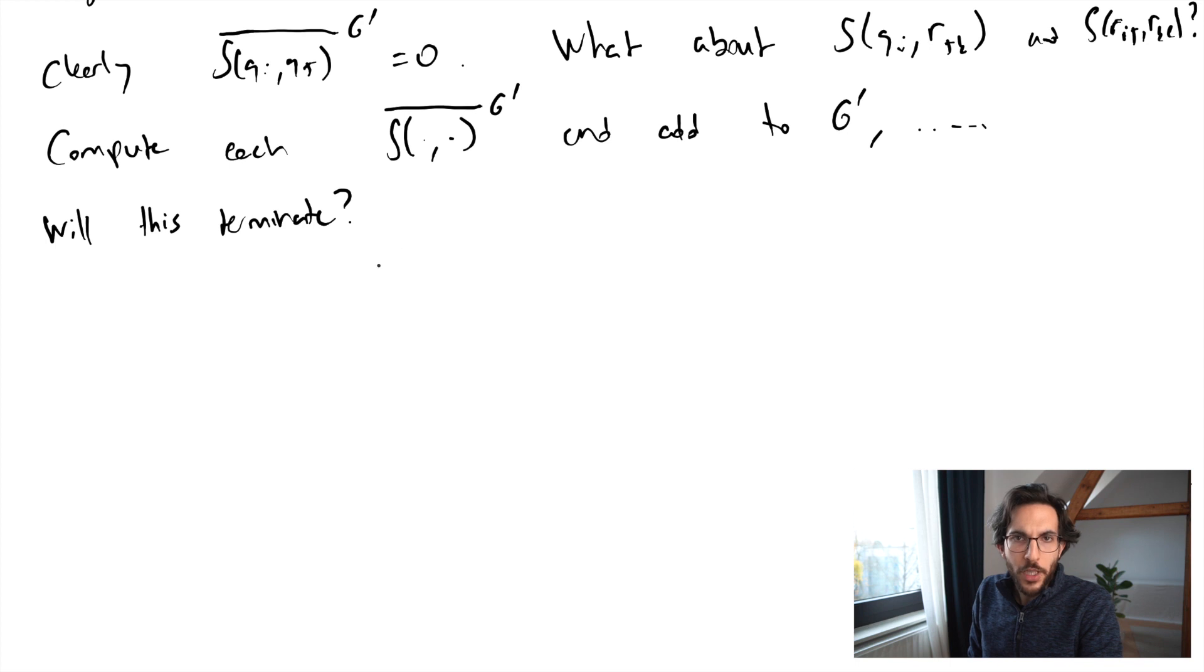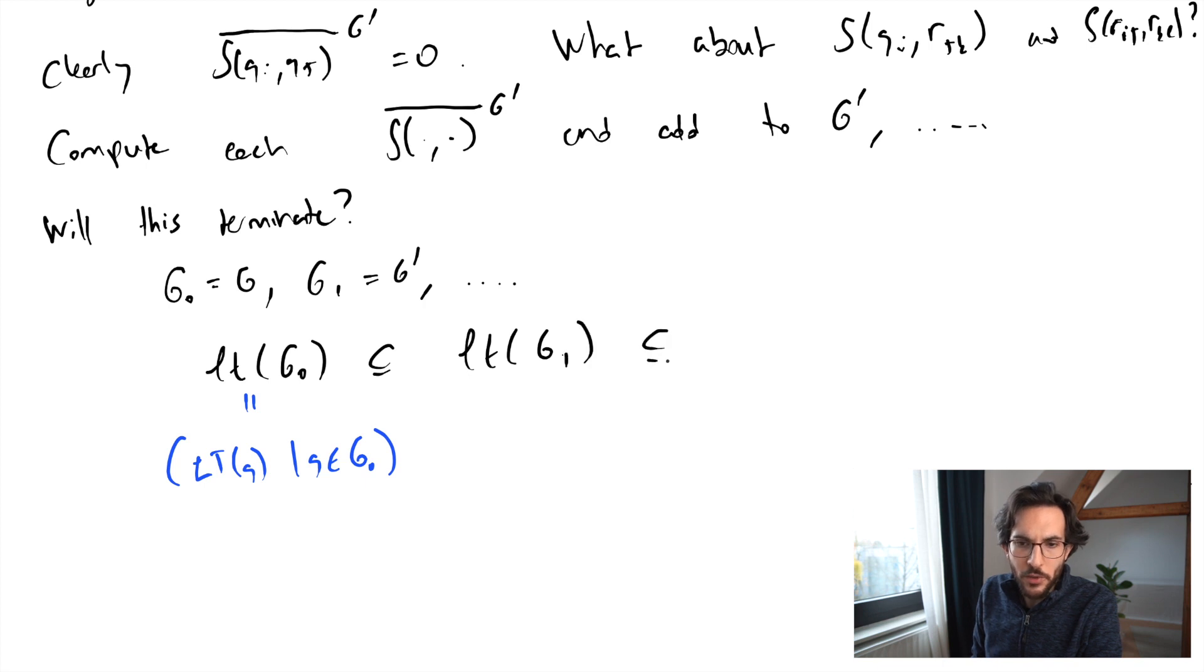To see that this process should terminate we can consider the following. Let's say we start with G0 and then we obtain G1, and as we repeat this process we get larger and larger generating sets for the ideal. We can consider the ideal generated by the leading terms of G0, which will lie in the ideal generated by the leading terms of G1 and so on. Of course all of these will lie in the ideal of leading terms of I. What we need to show is that at each step if the basis has grown larger, then the ideal of leading terms has grown larger.